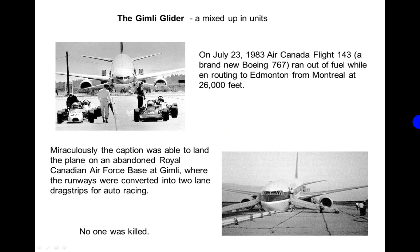Another mix-up: on July 23rd, 1983, Air Canada Flight 143, a brand new Boeing 767, ran out of fuel while en route to Edmonton from Montreal at 26,000 feet. Miraculously, the captain was able to land the plane on an abandoned Royal Canadian Air Force base at Gimli, where the runways were converted into two-lane drag strips for auto racing. No one was killed.